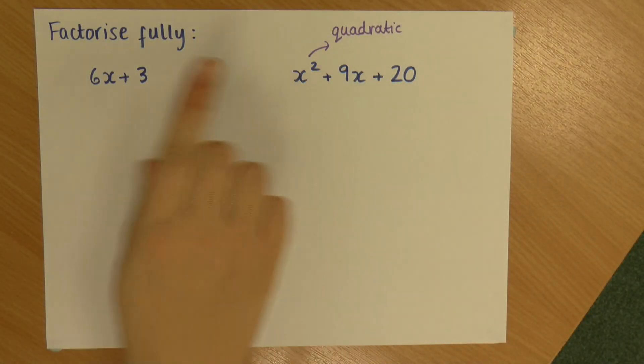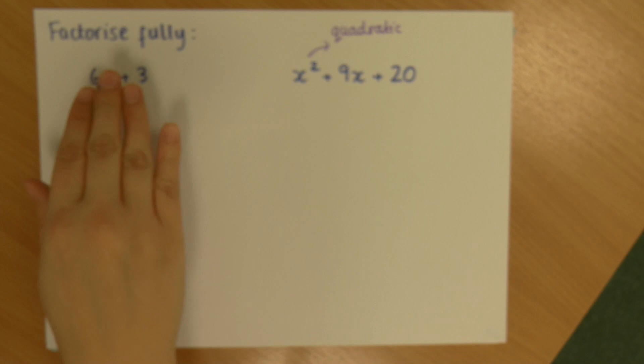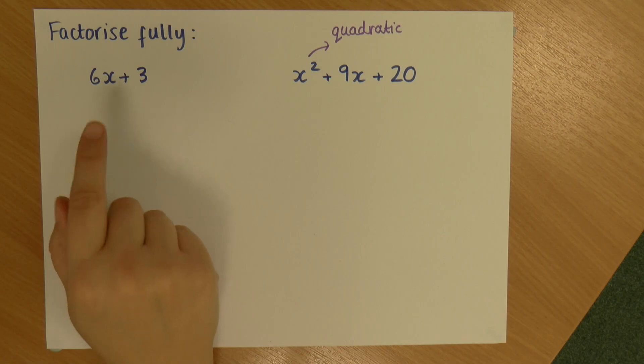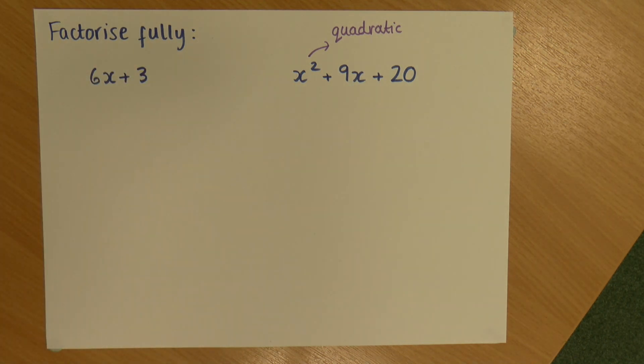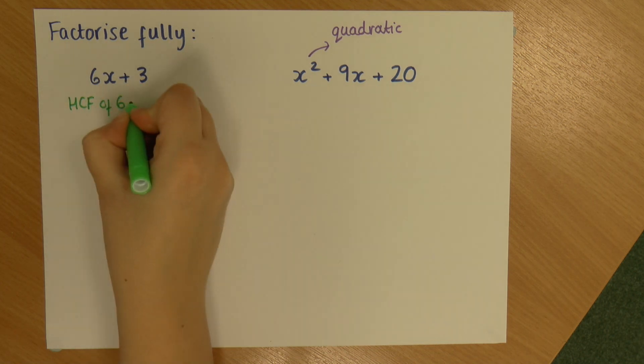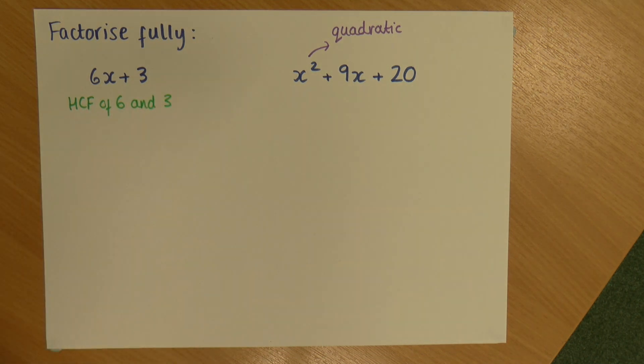So when we don't have that quadratic, it's easier to factorise like this. The first thing we do is we look at both of our numbers and we try and find the highest common factor of both of these numbers. So I want the highest common factor of 6 and 3. Please do go have a look at my highest common factor videos if you can't remember.